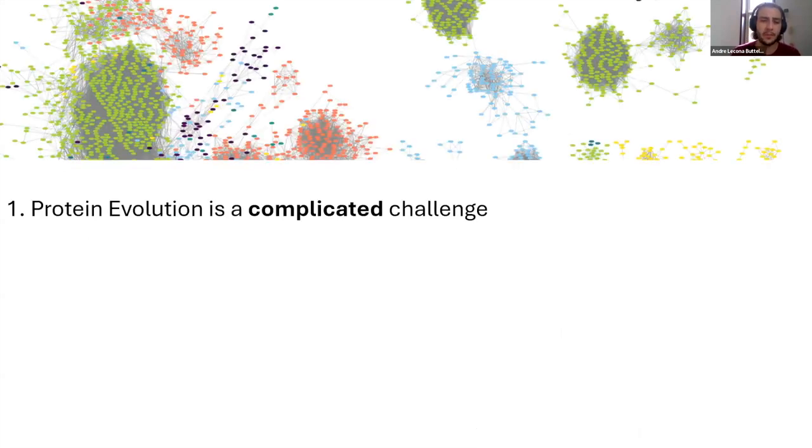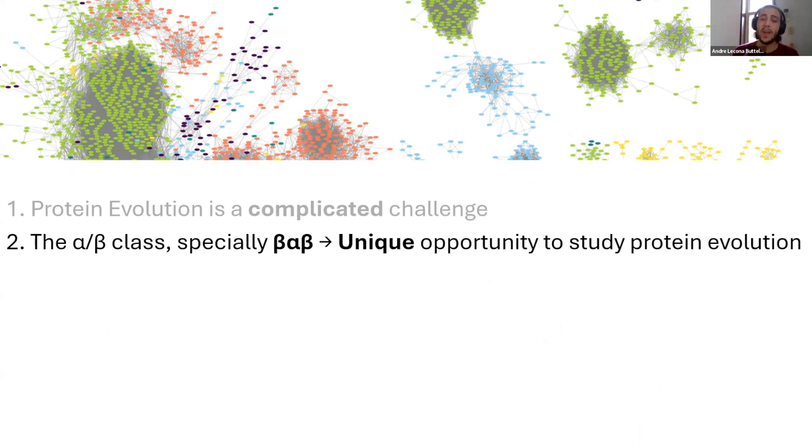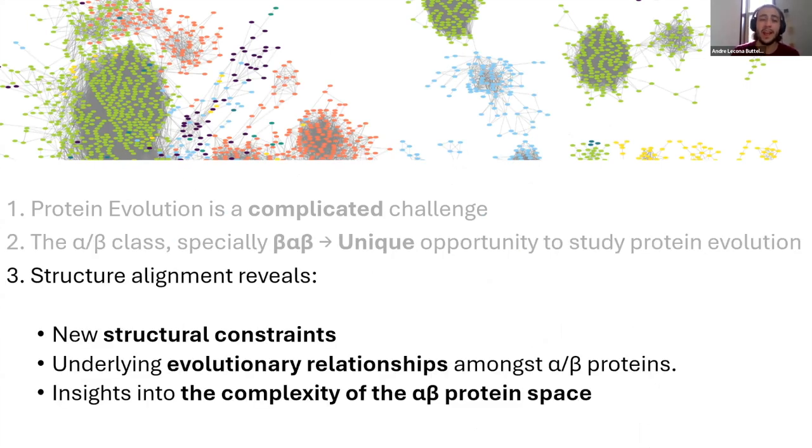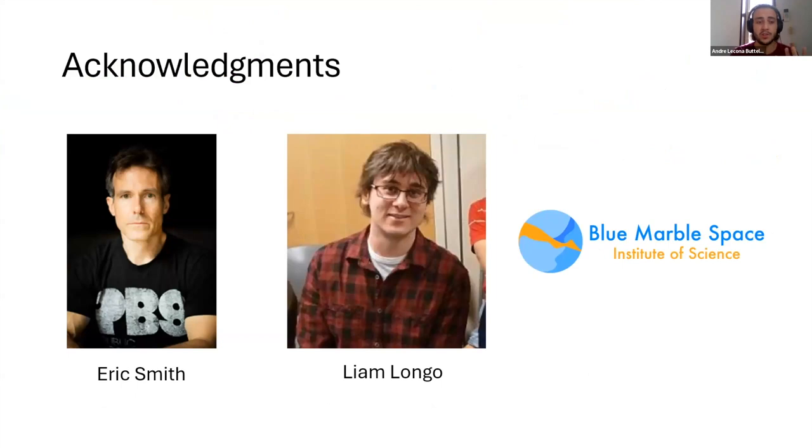So what is the concluding remarks? Protein evolution is a complicated challenge. There's a lot we don't know about proteins and a lot we don't know about how this type of polypeptides emerged. But we have some clues, especially the alpha slash beta class of proteins and the BAP motif offer a unique opportunity to study protein evolution. And through studying the structural alignment, we can reveal new structural constraints, we can reveal the underlying evolutionary relationships amongst the alpha slash beta proteins, and we can gain insight into the complexity of the alpha beta protein space. Lastly, before I end, I just want to give some acknowledgements. Thank you so much to Eric Smith, who gave key insights into the beta beta space, and to my supervisor and mentor, who has been very patient with me. Liam, thank you so much. And thank you everyone at the Blue Marble Space Institute for this summer internship.